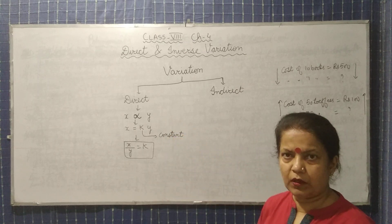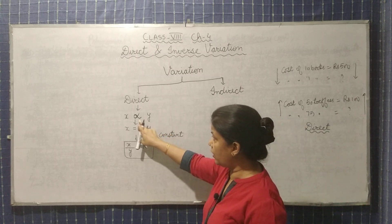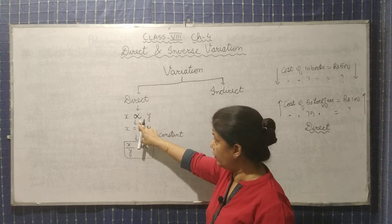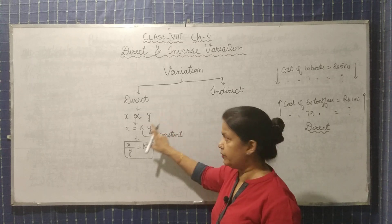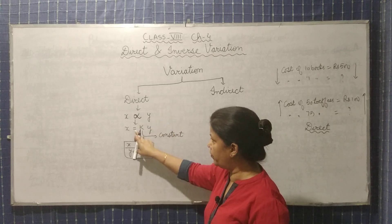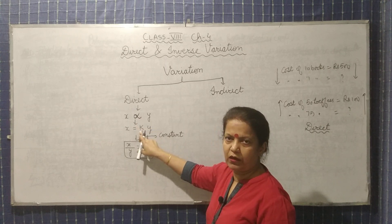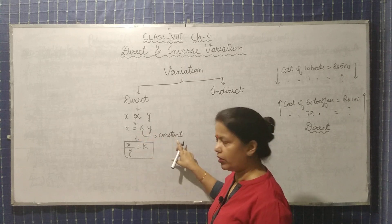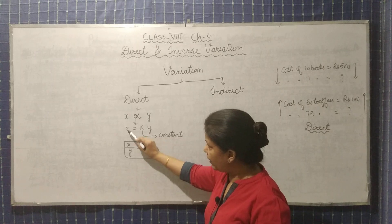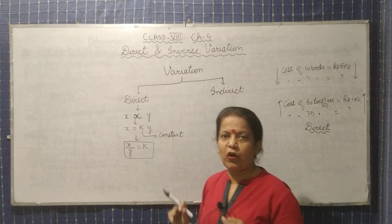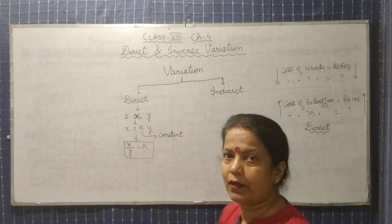So, x is directly proportional to y. This is the symbol of proportionality. If one increases, the other increases; if one decreases, the other decreases. To remove the proportionality sign, we put an equal sign and replace the proportionality symbol with k, where k is the constant. And from here, x upon y equals k. For direct variation, always x upon y equals k.